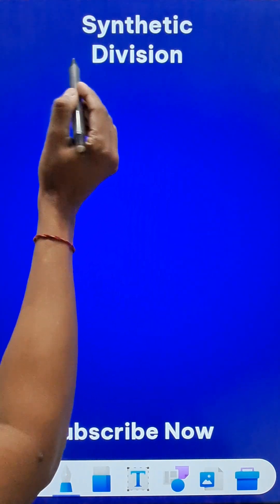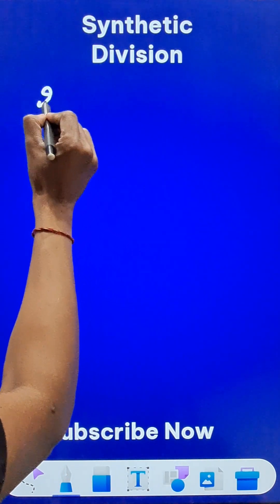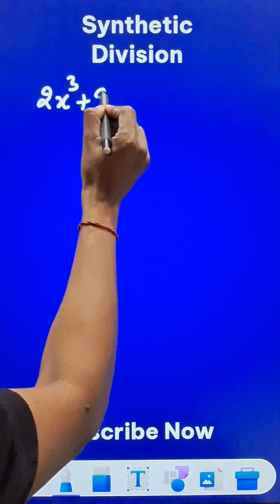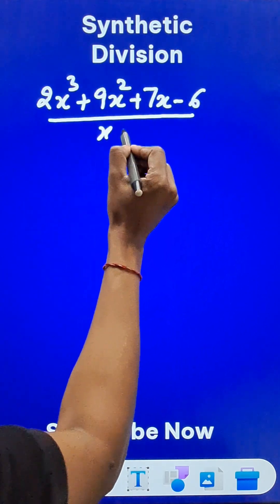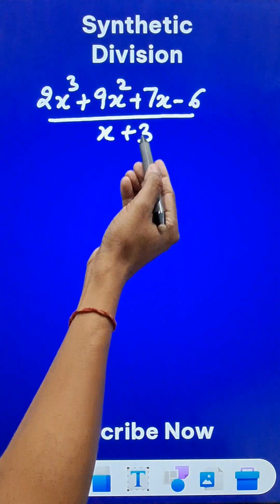When you have to divide a big cubic polynomial like 2x³ + 9x² + 7x - 6 by a linear polynomial like x + 3, you can actually do it without long division.